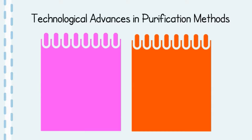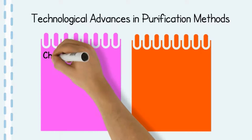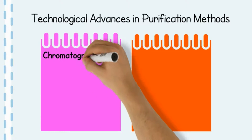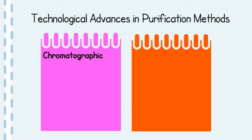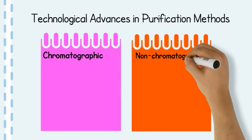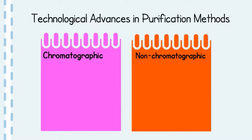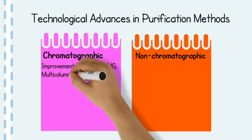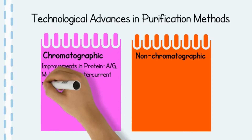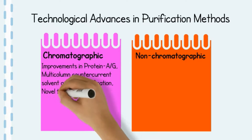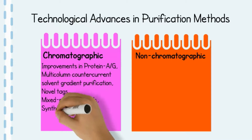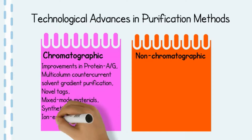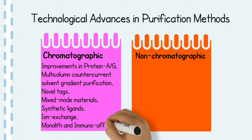In this review we look at recent technological advances in both chromatographic and non-chromatographic based techniques. We take an in-depth view at new improvements in chromatographic techniques that involve the use of protein A and G, multi-column counter-current solvent gradient purification systems, novel tags, advances in mixed-mode materials, synthetic ligands, ion exchange, monolith and immunoaffinity-based chromatography.